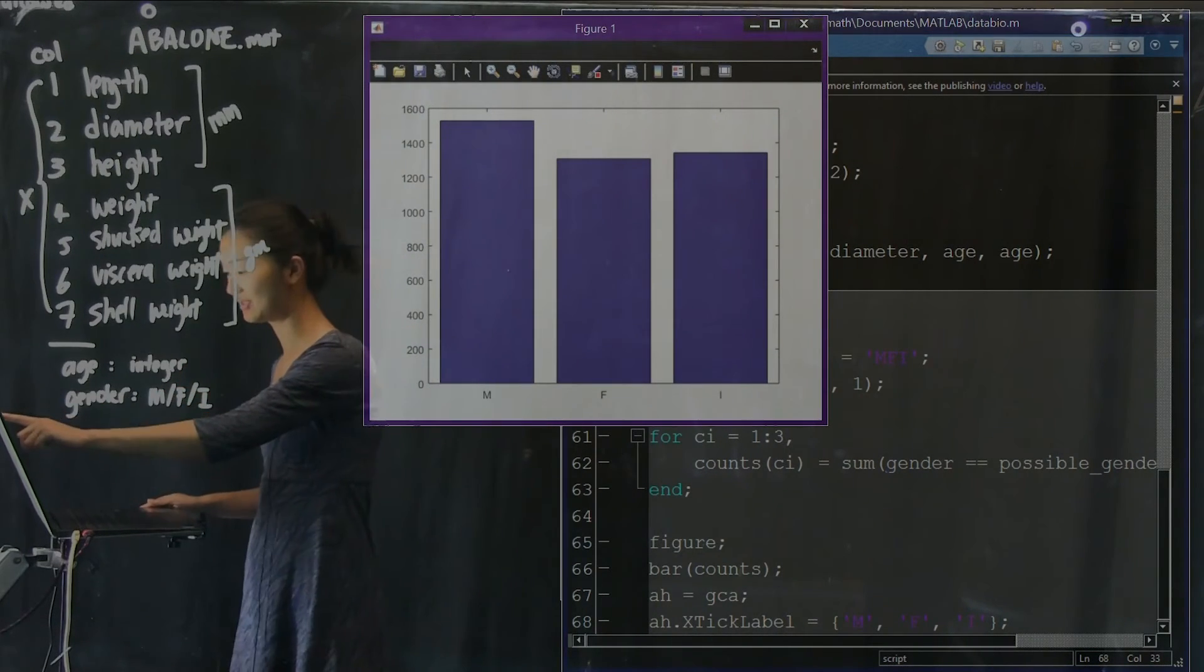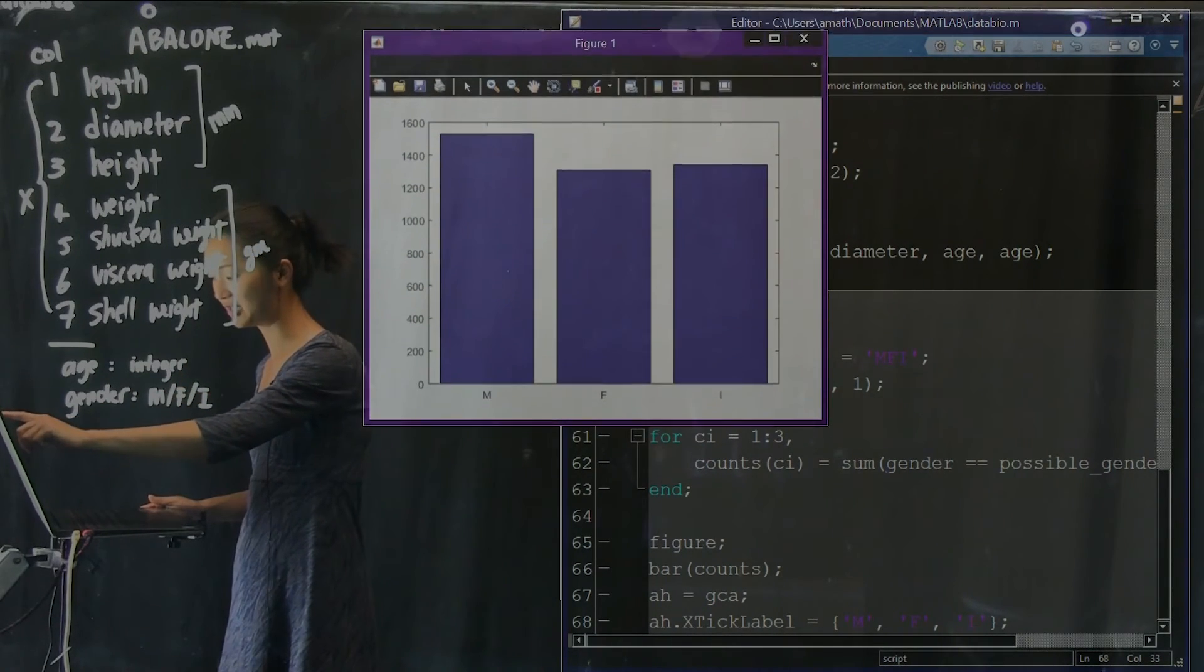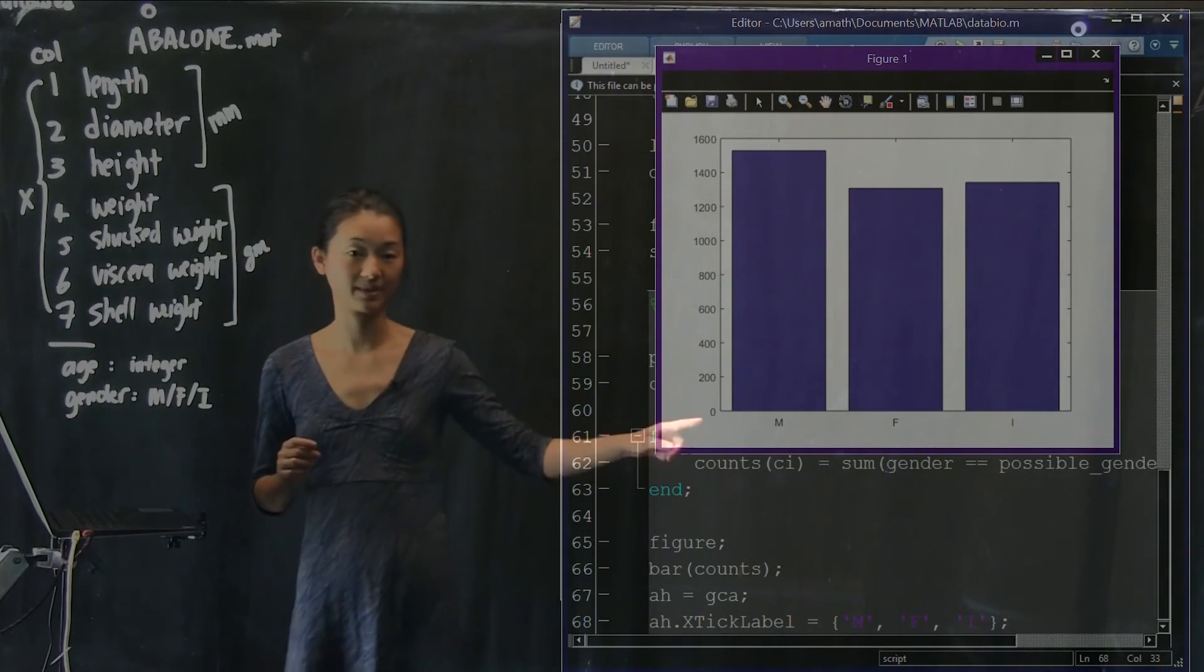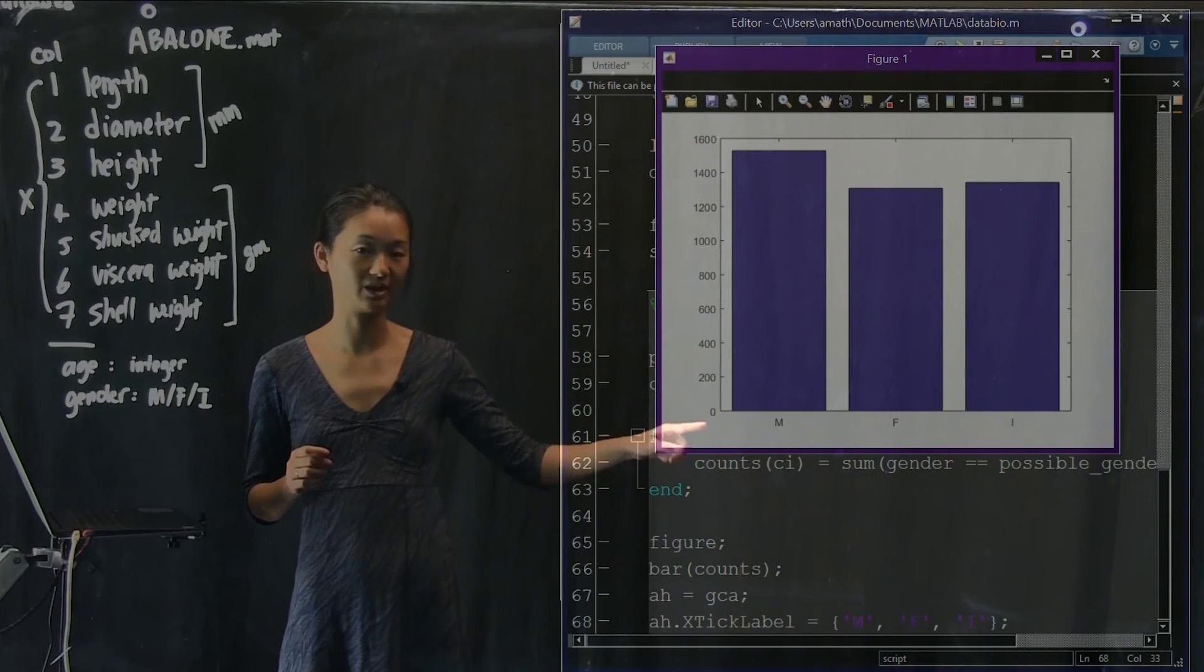So, we haven't changed the locations of the axes, but what we've changed is how they appear. So, now instead of being labeled one, two, and three, I have the x labels as M, F, and I.